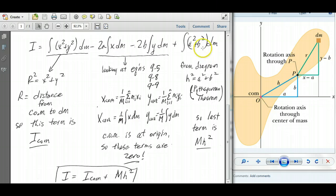And this last term, a squared plus b squared, we know is the same as h squared, so that becomes the integral of h squared dm. The integral of dm is m, the mass of the object, and h squared just acts as a constant, so the last term is equal to mh squared.